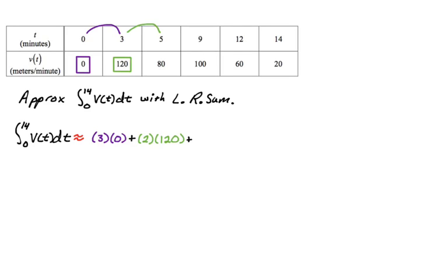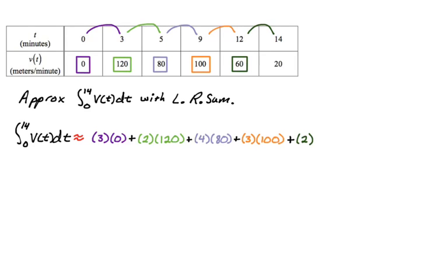We just keep going through the table. Here we'll have four, and the left endpoint gives me 80. Then we add three, and the left endpoint gives me 100. And finally, that's going to be a width of two, and at the left endpoint we have a function value of 60. And that's it.